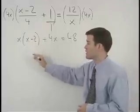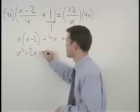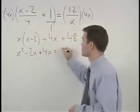Distributing through the parentheses, we have x squared minus 2x plus 4x equals 48.